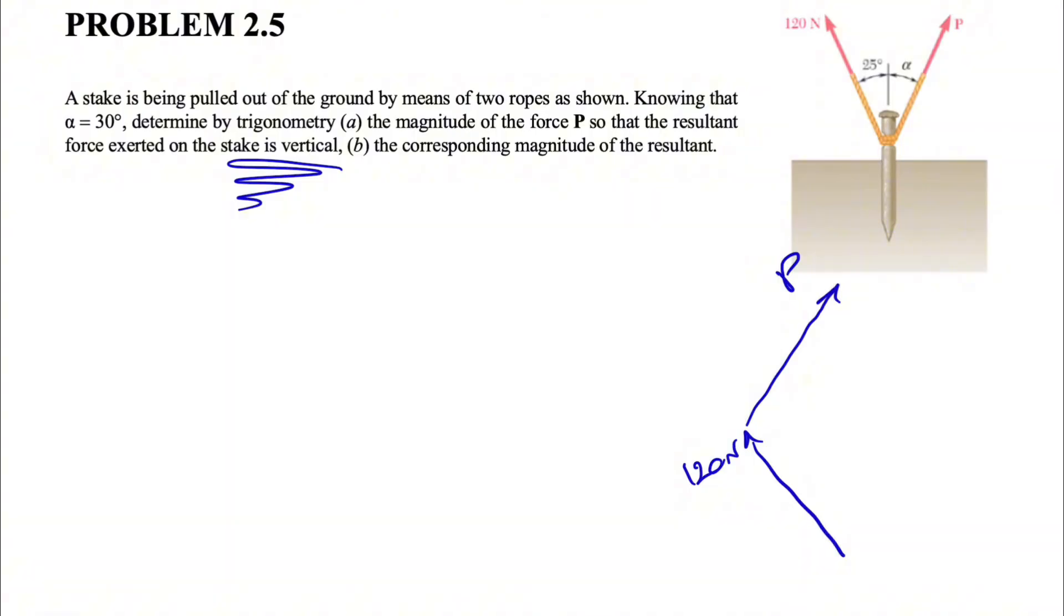If you want to show the resultant, I'm gonna show it in red. This will be the resultant that connects the tail of the first vector to the head of the second one. Let's call it R, and we know that R has to be vertical.